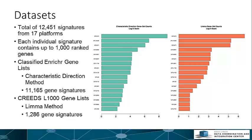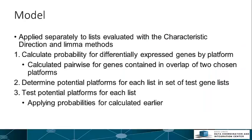The model was applied separately to lists evaluated with the Characteristic Direction and LIMMA methods. First, the model uses two-thirds of the data to calculate the probability for differentially expressed genes. This probability is calculated pairwise for genes in the overlap of all pairs of platforms. The remaining third of the data is used to test these probabilities by testing each potential platform for a chosen test gene list.